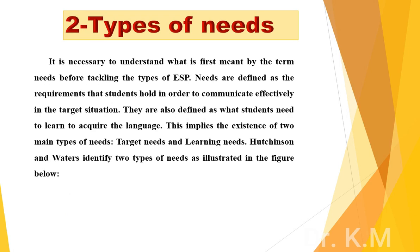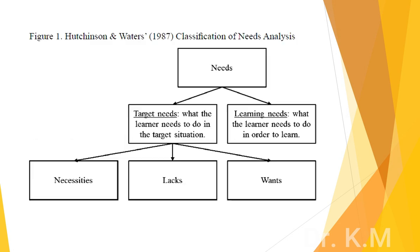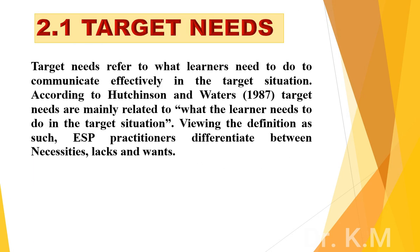Types of Needs. It is necessary to understand what is first meant by the term 'needs' before tackling the types of ESP needs. Needs are defined as the requirements that students hold in order to communicate effectively in the target situation. They are also defined as what students need to learn to acquire the language, implying the existence of two main types: target needs and learning needs. Hutchinson and Waters identify these two types of needs as illustrated in the figure below. Target needs refer to what learners need to do to communicate effectively in the target situation.